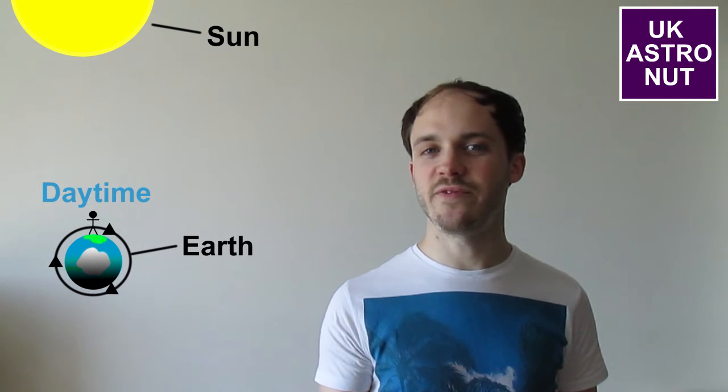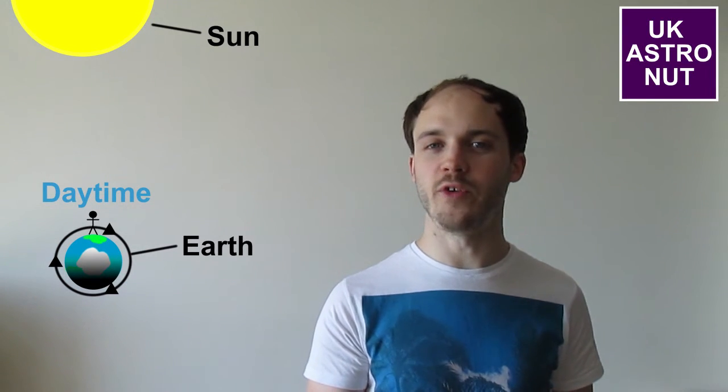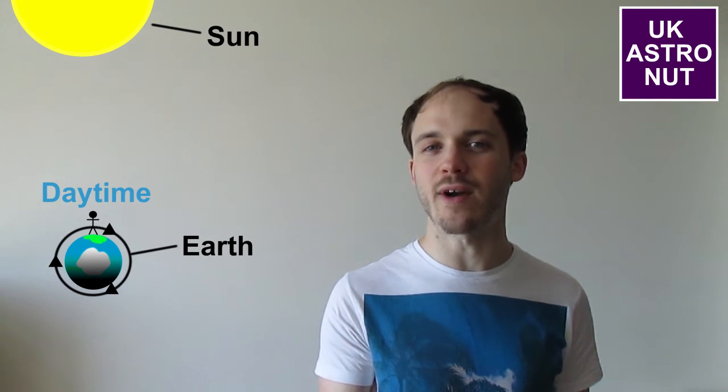It takes 24 hours for the Earth to make one full rotation, which is why there are 24 hours in a day. But it doesn't take exactly 24 hours for the Earth to make one full rotation, because the speed at which the Earth is rotating is beginning to slow down. So to counteract this, scientists came up with the idea of adding a leap second every few years.